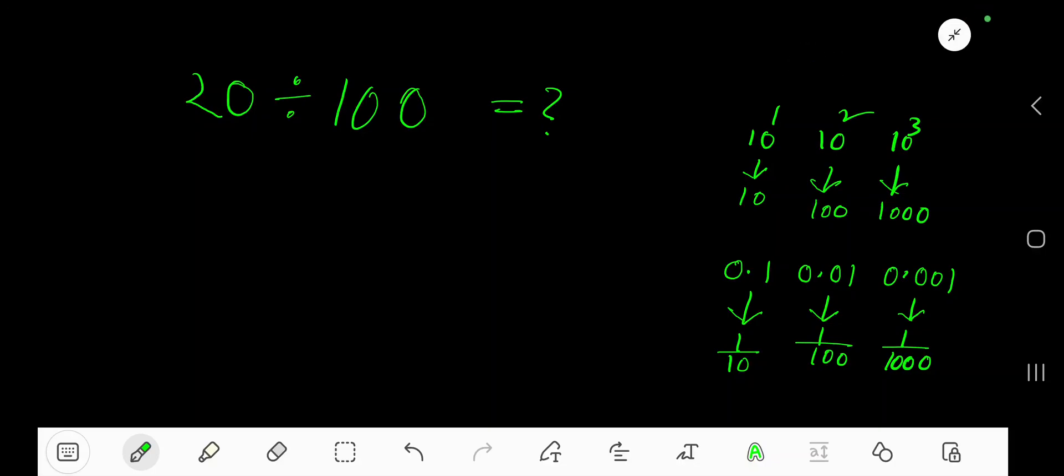How to divide 20 by 100. Look: 10, 100, 1000 - these are called powers of 10. To divide a whole number by a power of 10, just count the number of zeros in the power of 10 and move the decimal point from right to left.